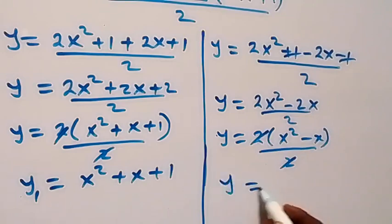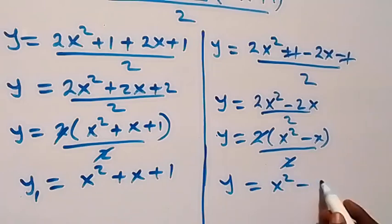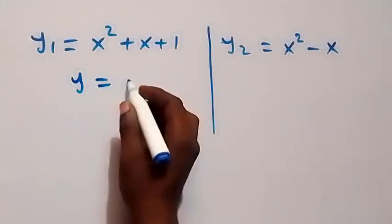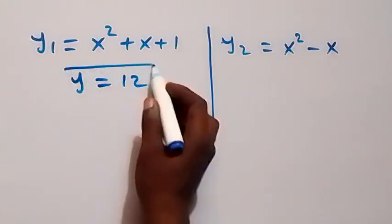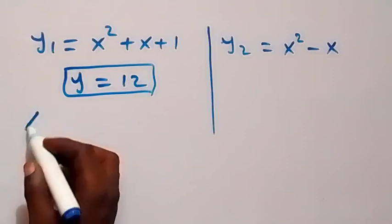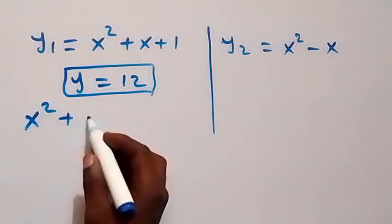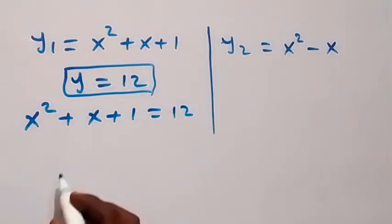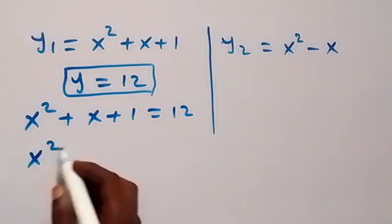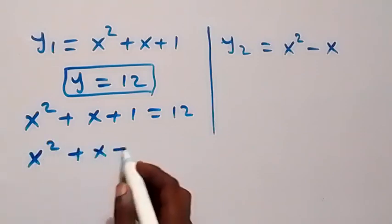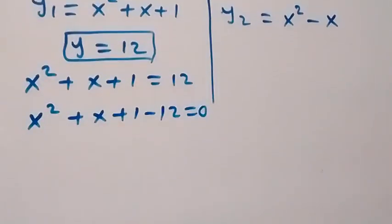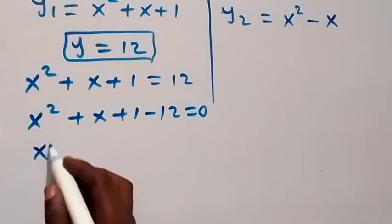For the second case, y equals to 2x squared minus 2x, plus 1 minus 1 which cancels, over 2. Then 2 is common: y equals to 2 bracket x squared minus x close bracket over 2. These cancel, so y equals to x squared minus x. Call this y₂. Now since y equals to 12, for y₁: x squared plus x plus 1 equals to 12, which gives us x squared plus x plus 1 minus 12 equals to 0, that is x squared plus x minus 11 equals to 0.